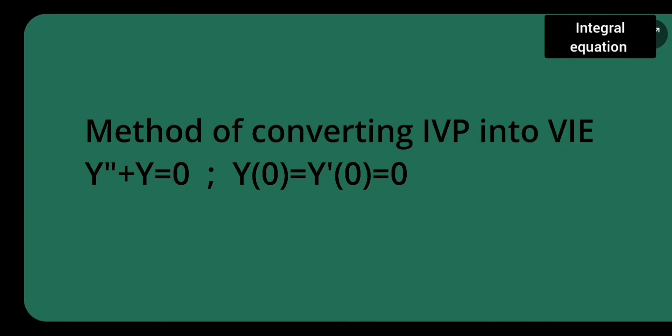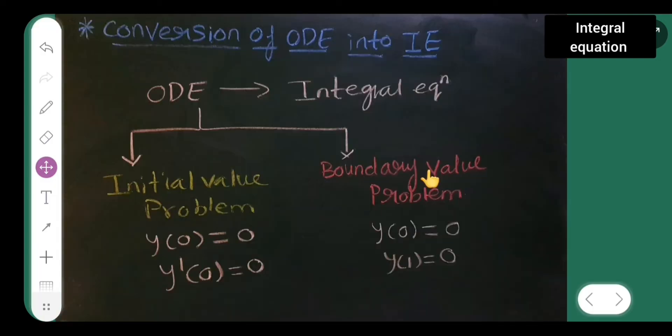In today's lecture on integral equations, I am going to teach the method of converting an initial value problem into an integral equation. The problem is y double dash plus y equals 0, where the conditions are given as y(0) = 0 and y'(0) = 0. Now let me start with it.